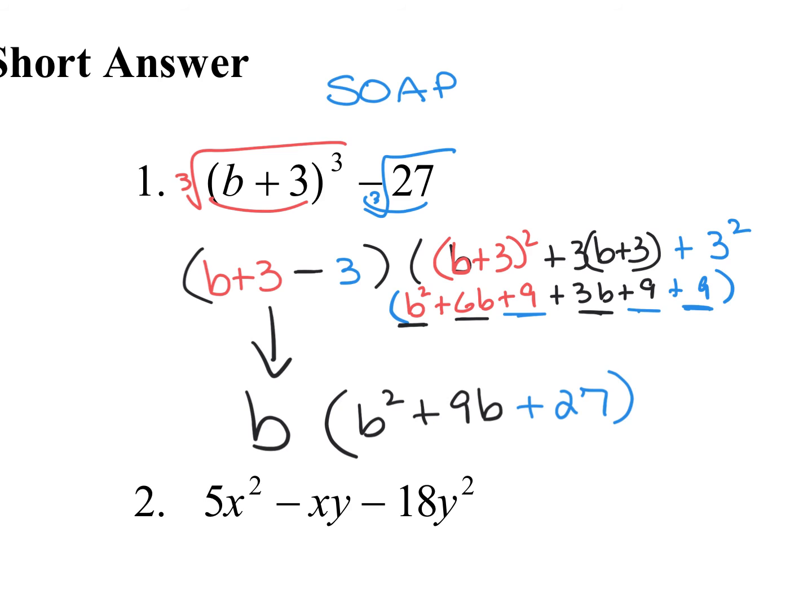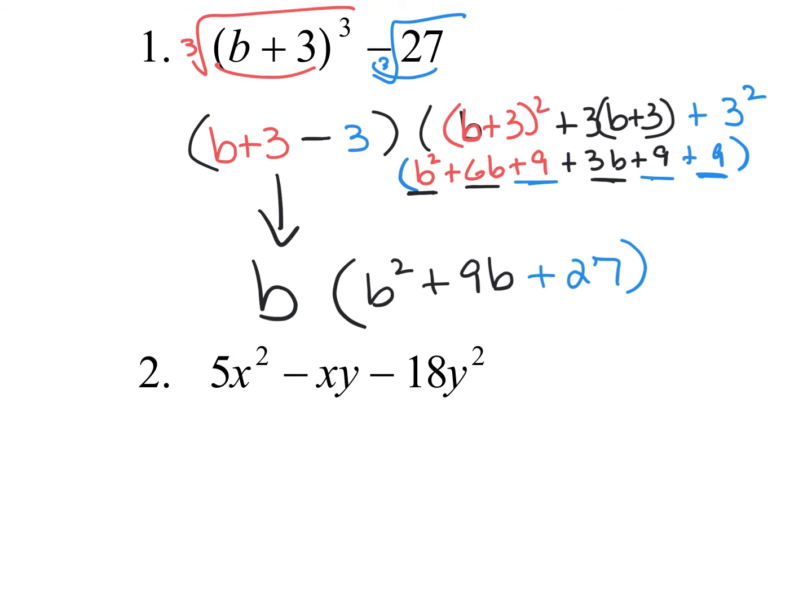The next one is a trinomial, but it has two different variables. We're still doing the same process. You can either guess and test or factor by grouping. Let's do factor by grouping: multiply the first and last coefficients — 18 times 5 is 90, and with the signs it's negative 90 x squared y squared. Notice the middle term — whenever this coefficient is 1 or negative 1, this gives a clue that the two factors are going to be side by side.